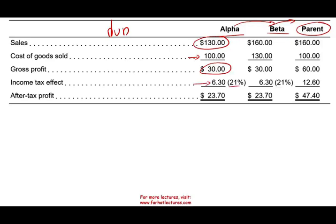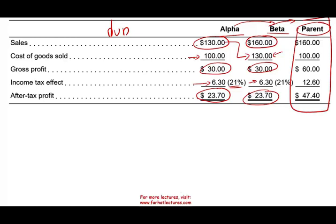Alpha pays 21% taxes — the US tax rate — which is $6.30, leaving an after-tax profit of $23.70. The sale price for Alpha becomes the cost for Beta. Beta sells the item for $160; their cost is $130, their profit is $30, they pay $6.30 in taxes, and their after-tax profit is $23.70. Overall, the whole company has $160 in sales, $100 in cost, $60 in profit, $12.60 in taxes, and $47.40 in net profit.